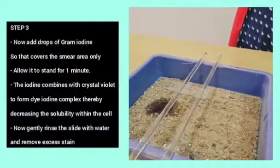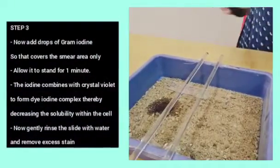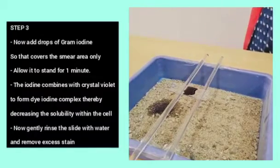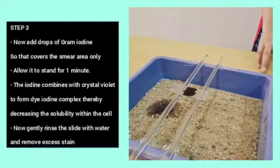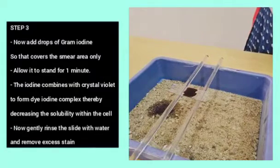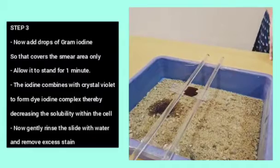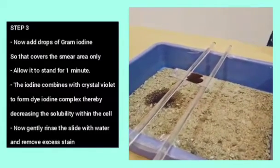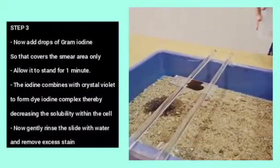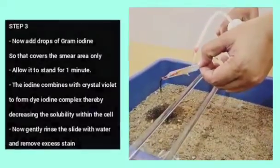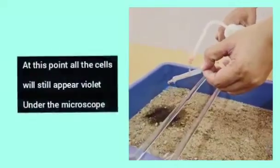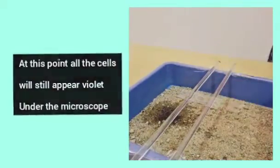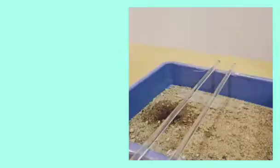Step 3. Now, add drops of grams iodine so that it covers the smear area only. Allow it to stand for 1 minute. The iodine combines with crystal violet to form di-iodine complex thereby decreasing the solubility within the cell. Now, gently rinse the slide with water and remove the excess stain. At this point, all the cells will still appear violet under the microscope.